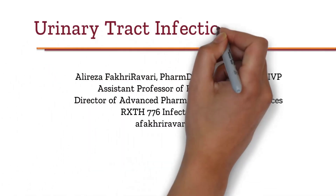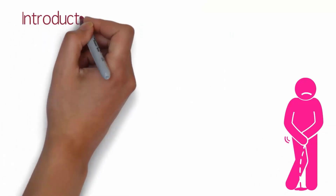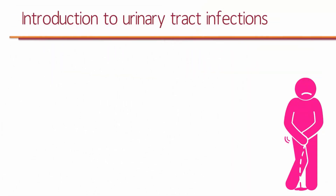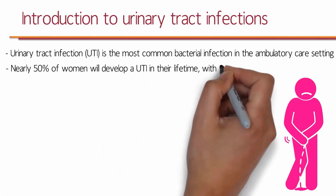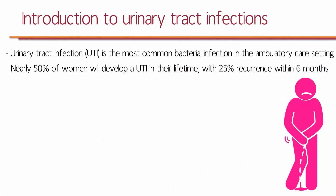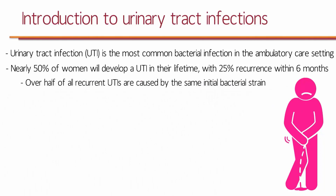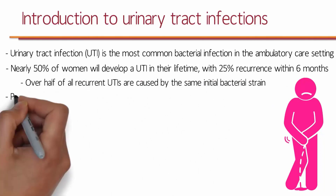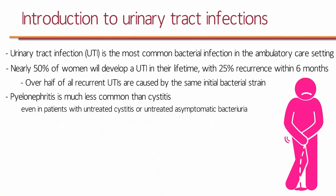I'm Dr. Fakhri Ravadi and this is Urinary Tract Infections in Adults. The basics are so important. Urinary tract infection is the most common bacterial infection in the ambulatory care setting in the United States. Nearly half of females will develop a UTI in their lifetime with 25% recurrence within 6 months. Over half of all recurrent UTIs are caused by the same initial bacterial strain. Pyelonephritis is much less common than cystitis, even in patients with untreated cystitis or untreated asymptomatic bacteriuria.